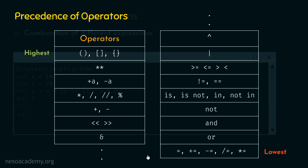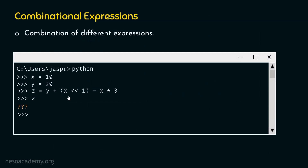Now we are ready to solve: z = y + (x << 1) - x * 3. Clearly, the assignment operation must be performed last — we evaluate the right-hand expression first. Within that expression, we have parentheses containing x << 1. Although left shift normally has lower precedence than plus, minus, and multiplication, here it is inside parentheses, so it has the highest priority. We perform x << 1 first, replacing x with 10: 10 << 1 = 10 × 2¹ = 20.